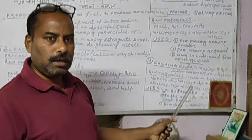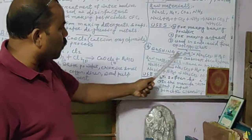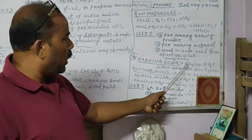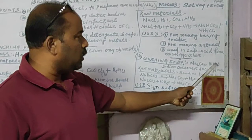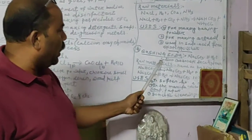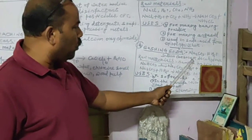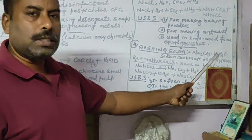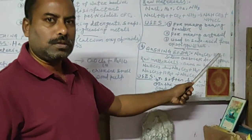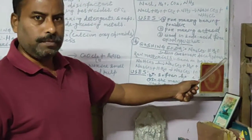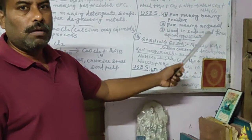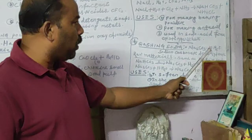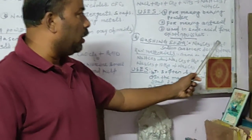The fourth compound is washing soda. Its chemical formula is Na₂CO₃·10H₂O and its chemical name is sodium carbonate decahydrate. It is in the water of crystallization form, because the compound is found with a certain number of water molecules.